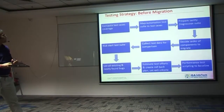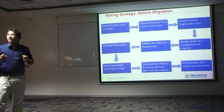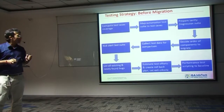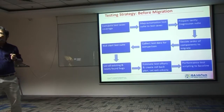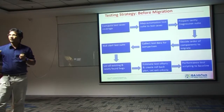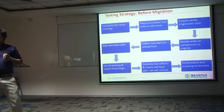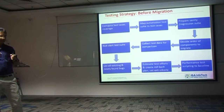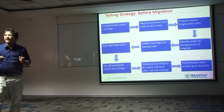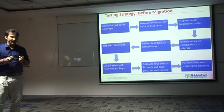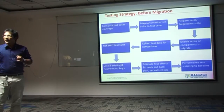In the before migration phase, QA needs to compute the test cases to be included in the smoke and regression test suites, and determine what percentage of those test cases will be automated and then executed. QA also needs to advise and suggest the priority order of the components that need to be migrated, in consultation with the business.